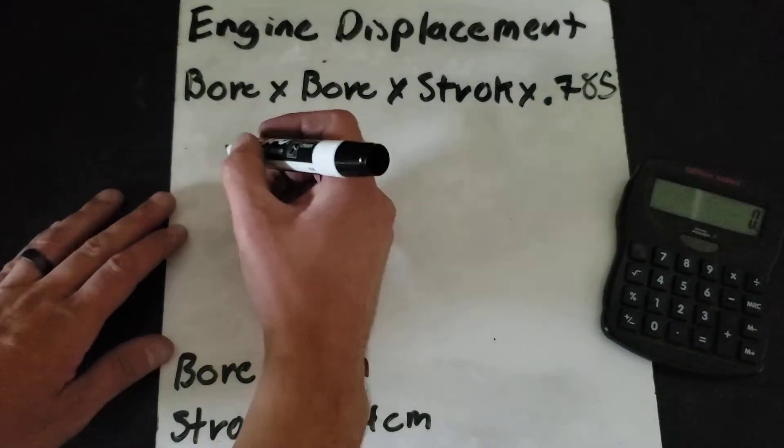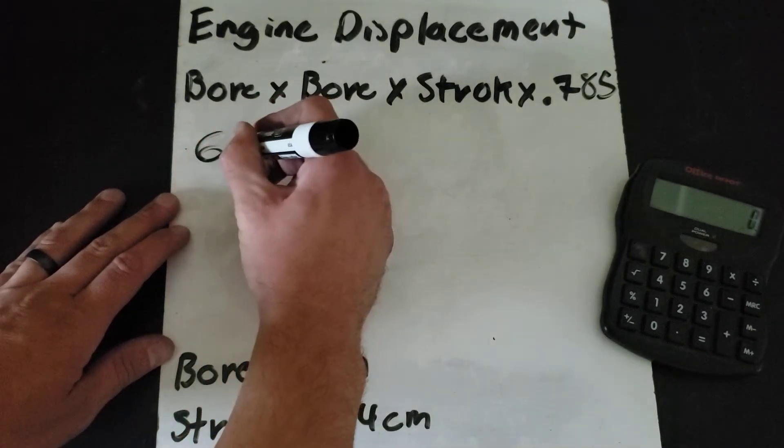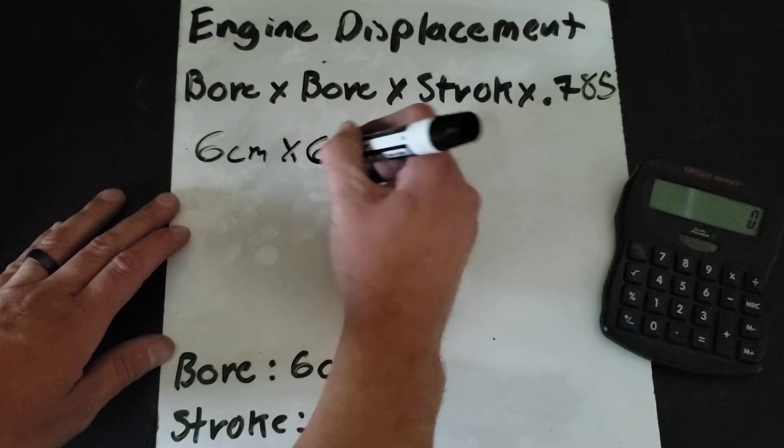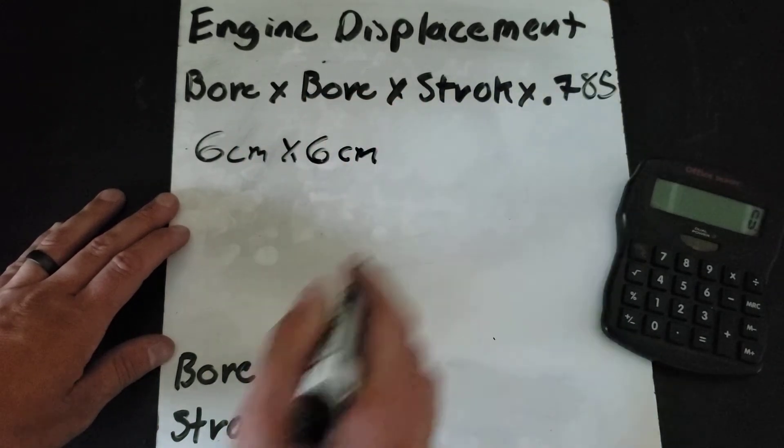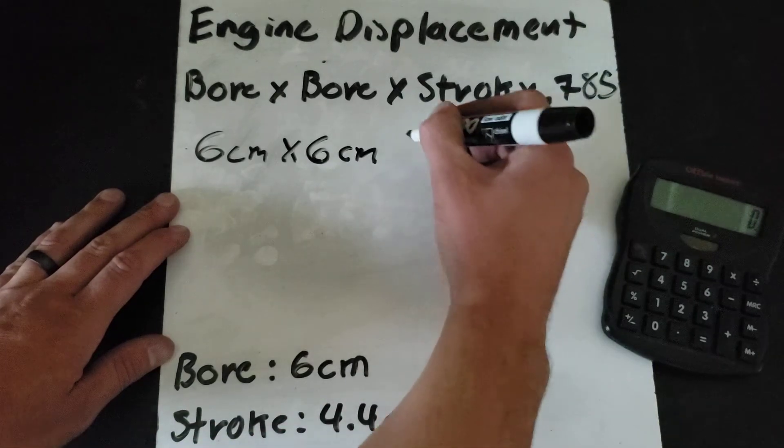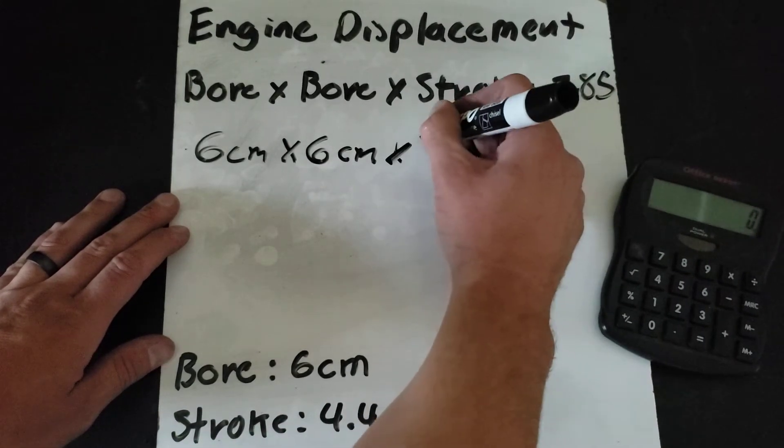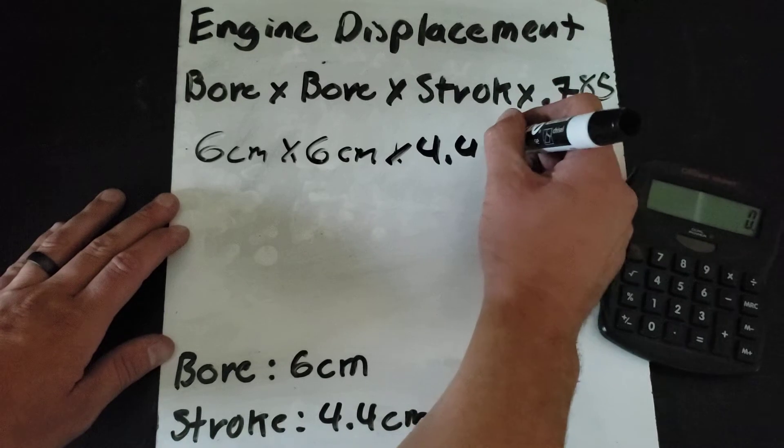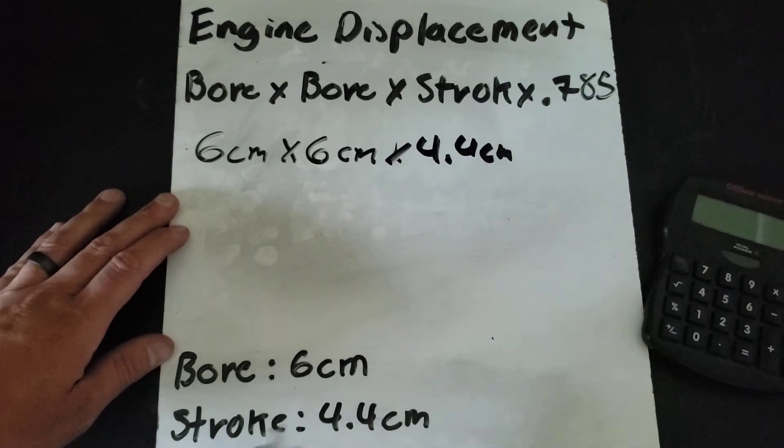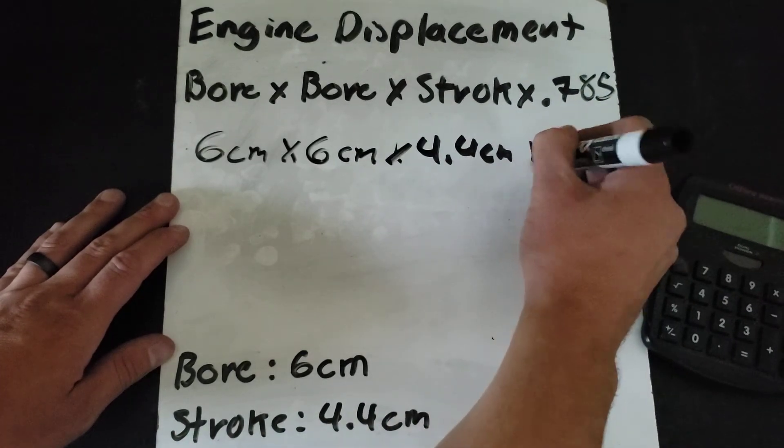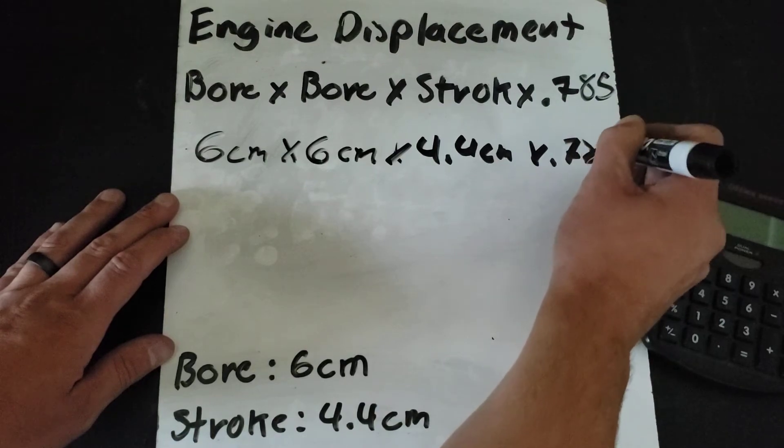So I'm going to take 6 centimeters times 6 centimeters, the measurement of our bore. Then I'm going to times that by 4.4 centimeters, the measurement of our stroke, times 0.785.